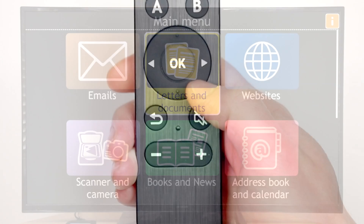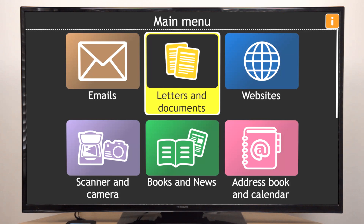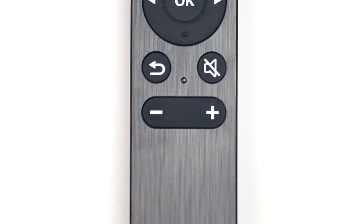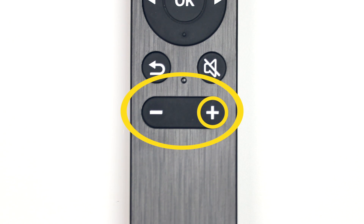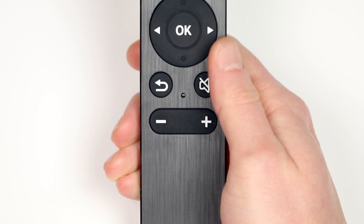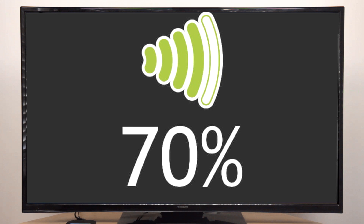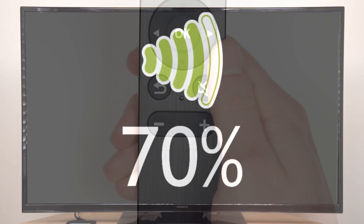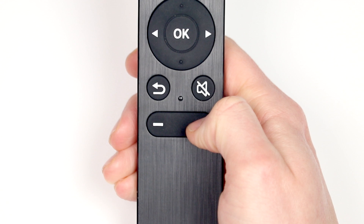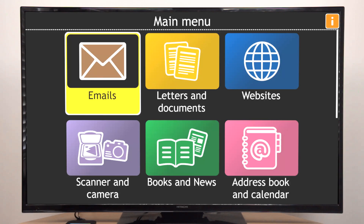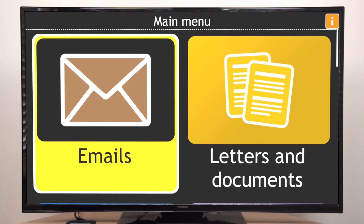For example, pressing the Speaker button repeats the current item, such as Letters and Documents. The third group of buttons is below the tactile dot and includes a long button with a plus symbol on the right and minus symbol on the left. Press either the plus or minus button to increase or decrease the volume. Alternatively, press and hold the plus or minus buttons to increase or decrease the magnification.